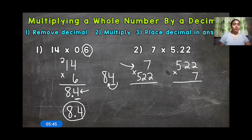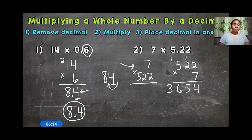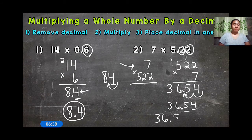So now we multiply. Step 2: 7 times 2 is 14, 7 times 2 is 14 plus that 1 is 15, 7 times 5 is 35 plus 1 is 36, so we get 3,654. But that's not our final answer — we need to place the decimal. Looking at our original problem, we count 1, 2 digits behind the decimal, so our answer needs 2 digits behind it. Bringing it in 1, 2 gives us 2 digits behind the decimal. We rewrite our final answer as 36 and 54 hundredths.